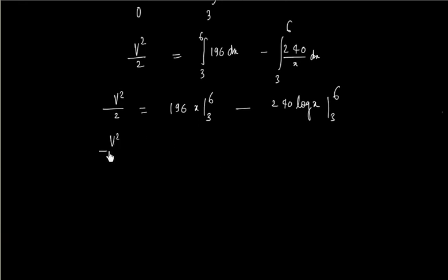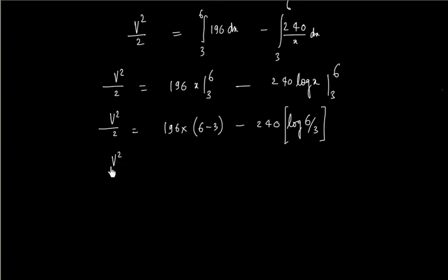So this is x, 3 to 6, minus 240. So we will have v square by 2 is equal to 196 into 6 minus 3, minus 240 into log. 6 minus 3, so that is log 3 by 2, 6 by 3. So v square by 2 is equal to 196 into 3 minus 240 log 2.